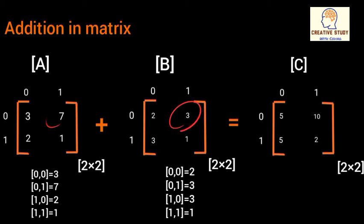Similarly, 2 and 3 are at index [1,0], so they will be added together. And 1 and 1 will be added because they are at index [1,1].